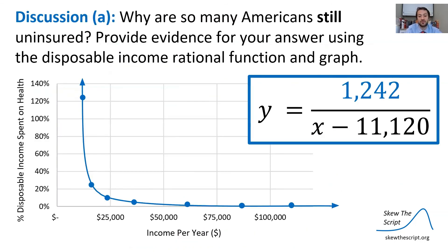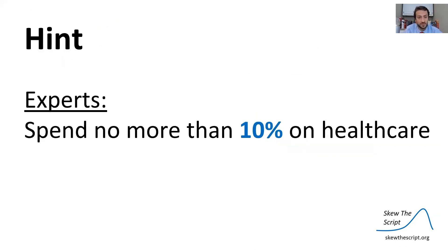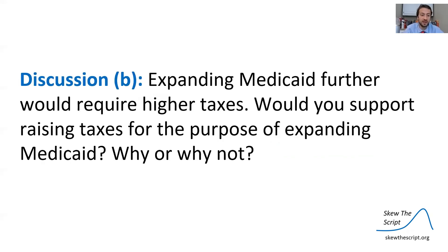That brings us to our discussion. Point A: why are so many Americans still uninsured? Provide evidence for your answer using the disposable income rational function and the graph shown. Recall that experts say you should spend no more than 10% of your disposable income on healthcare. Discussion question part B: expanding Medicaid further would require higher taxes — would you still support raising taxes for the purpose of expanding Medicaid? Why or why not? Something to discuss with your classmates. That's all for today's session. We'll see you next time on Skew the Script.